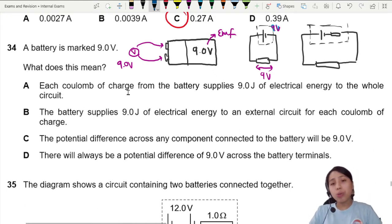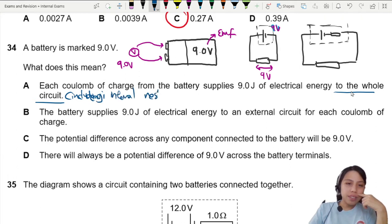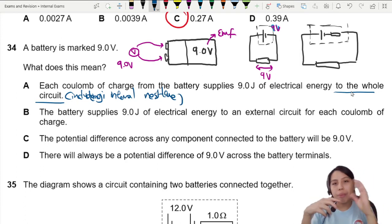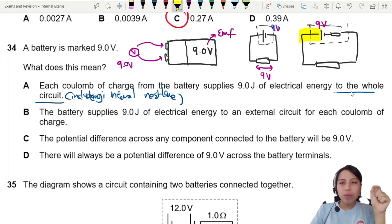A says, each coulomb of charge from the battery supplies 9 joules to the whole circuit. So that's the definition of EMF in general, energy. So, 9 joules to the whole circuit, including internal resistance, if any. That sounds okay. So EMF 9 volt means 9 joules per coulomb for the whole circuit, including internal resistance. Possibly correct.